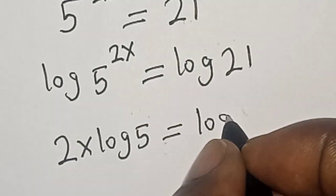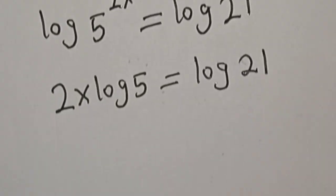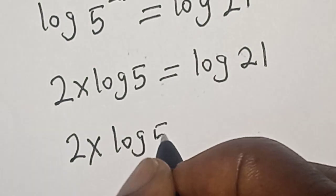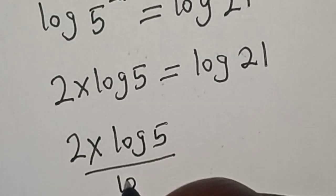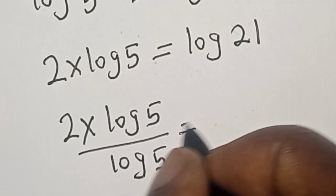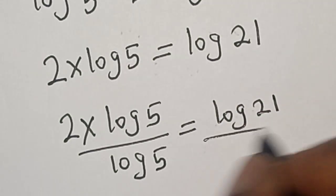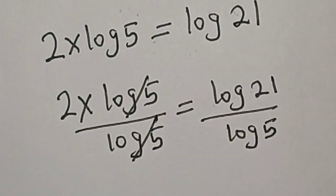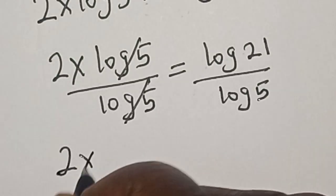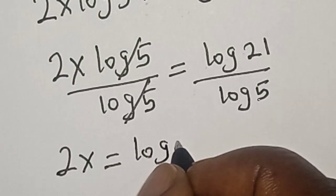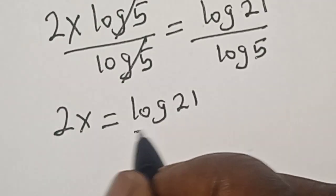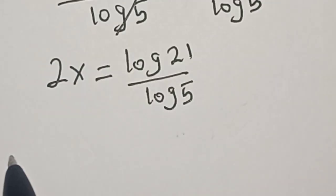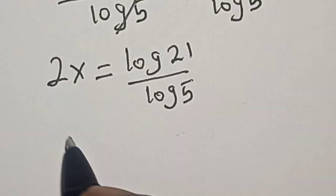is equal to log 21. Let's divide both sides by log 5. 2s log 5 divided by log 5 is equal to log 21 divided by log 5. This will cancel. But what we are looking for is the value of x,